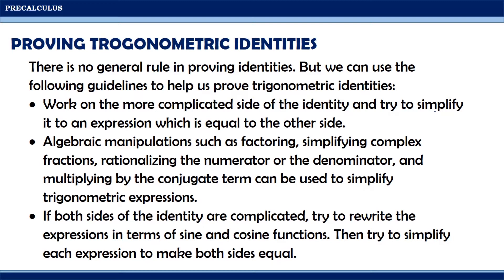And finally, if both sides of the identity are complicated, try to rewrite the expressions in terms of sine and cosine functions, then try to simplify each expression to make both sides equal. Remember that when we prove trigonometric identities, it is very important to show at the end of the proof that the left side is equal to the right side of the equation.